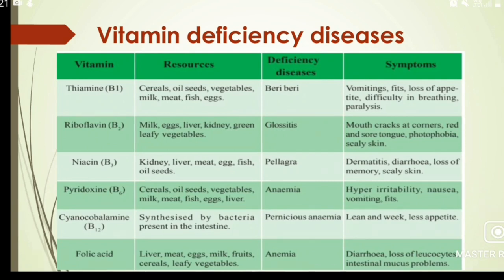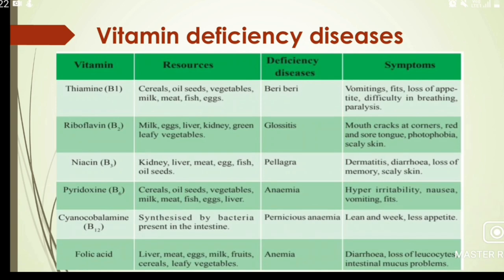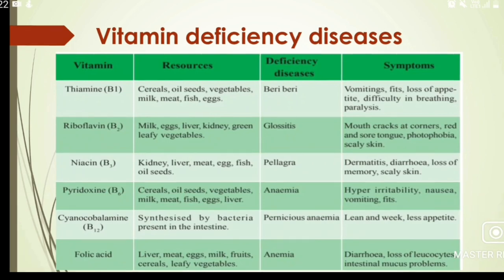Vitamin B6 is Pyridoxin. Sources include cereals, oil seeds, vegetables, milk, meat, fish, and eggs. The deficiency disease is anemia. Symptoms include hyper-irritability, nausea, vomiting, and fits. Vitamin B12 is Cyanocobalamin, synthesized by bacteria present in the intestine. Its deficiency disease is pernicious anemia. Folic acid sources include liver, meat, eggs, milk, fruit, cereals, and leafy vegetables; its deficiency disease is anemia, with symptoms of diarrhea, loss of leukocytes, and intestinal mucous problems.